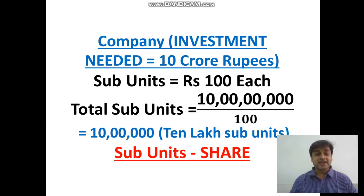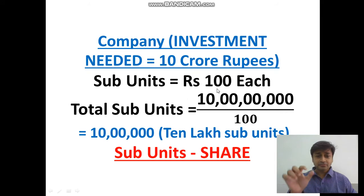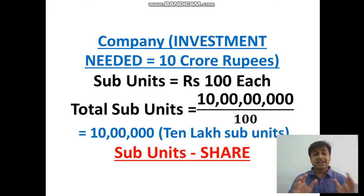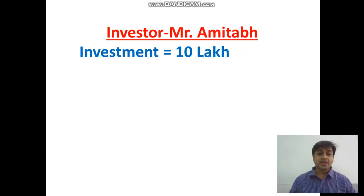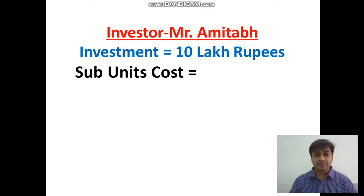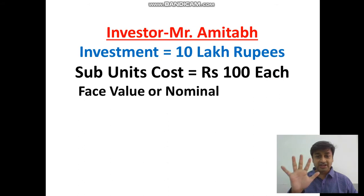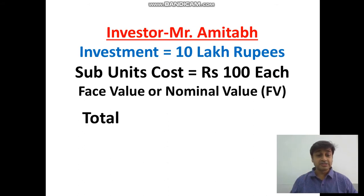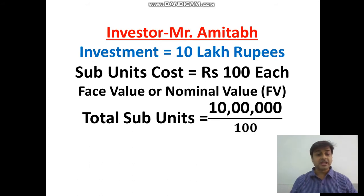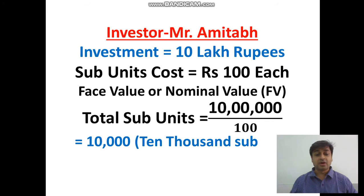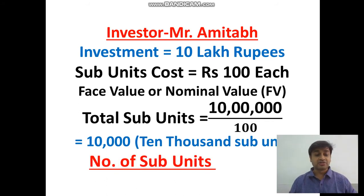So the topic for today is shares and dividend. The first thing on this slide, which we need to understand, is the total investment that is needed — 10 crores — divided into 100 rupees each subunit. When I divide total investment by subunit, I get 10 lakh subunits or 10 lakh shares. I found my first investor, Mr. Amita. He wants to invest rupees 10 lakhs in my company. So 10 lakhs divided by 100 gives Mr. Amita 10,000 subunits or 10,000 shares. Mr. Amita is now owner of 10,000 shares of my company.